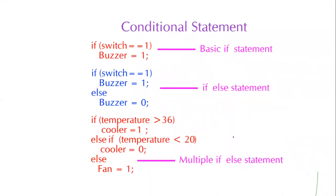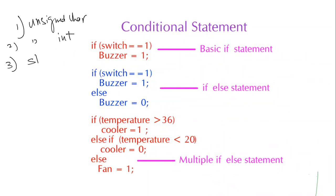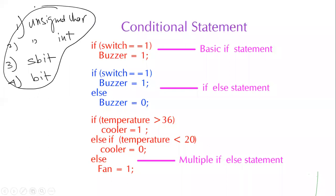In summary, the four data types are: unsigned char, unsigned int, sbit (for assigning names to port pins), and bit (Boolean). These four data types are sufficient to handle approximately 90% of applications in 8051 embedded C. Floating point is very rarely needed, and there are ways to work around it without using floating point data types — we will cover those later.